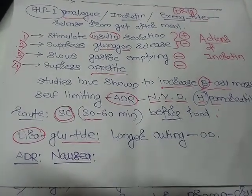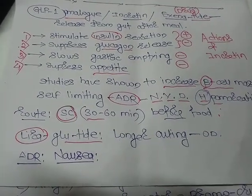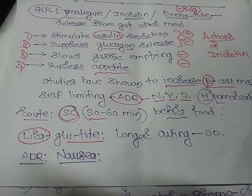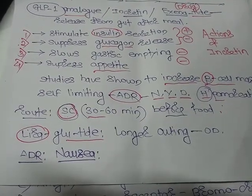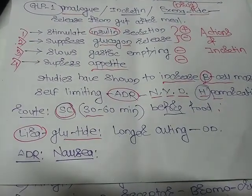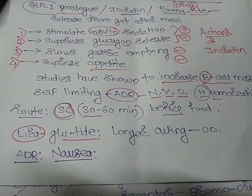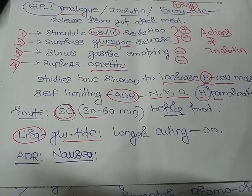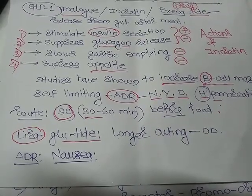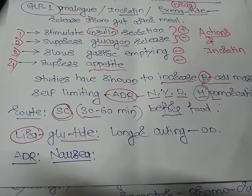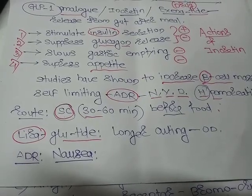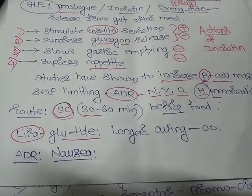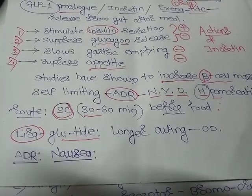Today we are going to discuss the newer anti-diabetics or newer drugs in diabetes mellitus. We have GLP-1 analog, which is also called as incretin, and the name of the drug is exenatide.